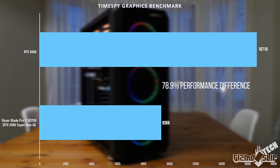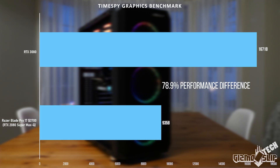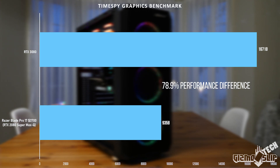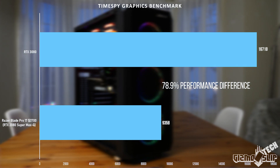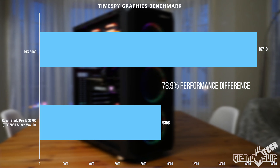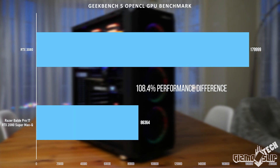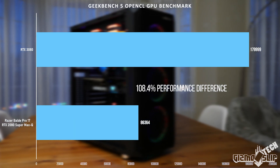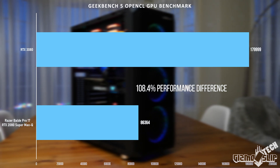In my RTX 3080 versus RTX 2080 Super Max-Q comparison, I had a 78.9% performance difference in Time Spy graphics, but in Geekbench 5 there is a 108% performance difference. So it is important to keep in mind that this is just a synthetic benchmark and not representative of the entire gaming experience — it just gives us a potential taste of what the performance difference might be under optimal conditions.